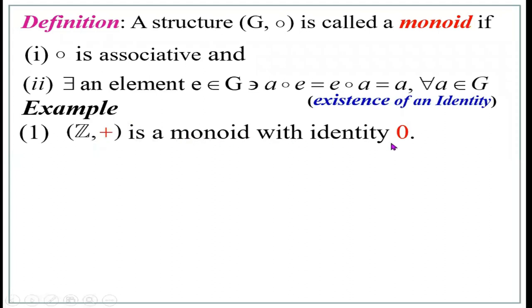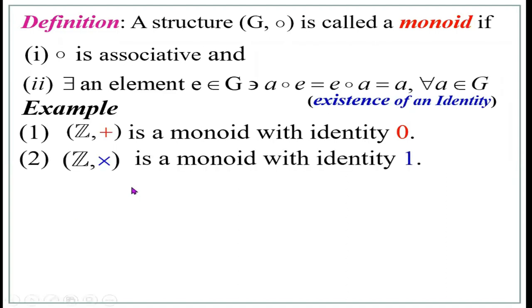For example, Z comma plus is a monoid with identity zero. Because adding any integer with zero gives the same integer. Z comma plus satisfies three conditions: Z is closed under addition, it satisfies associativity, and the identity is zero. However, the set of natural numbers N comma plus is not a monoid because there is no zero in the set of natural numbers — so the identity condition fails.